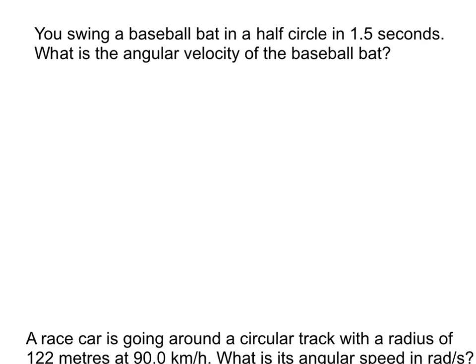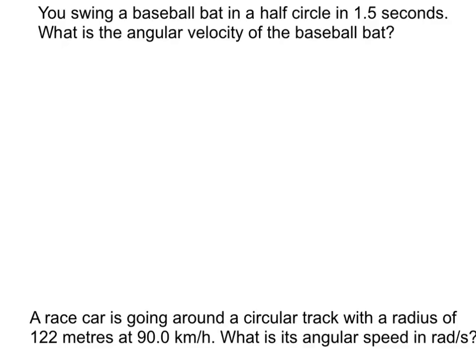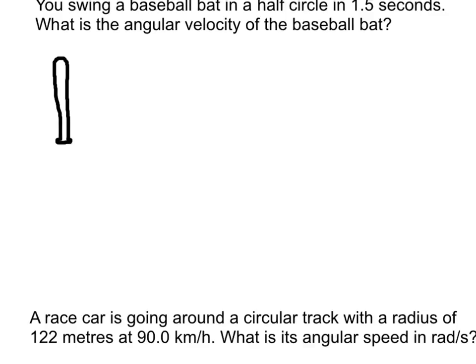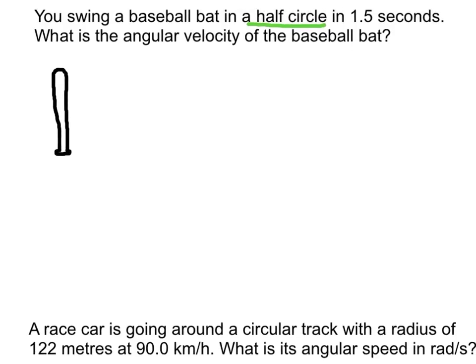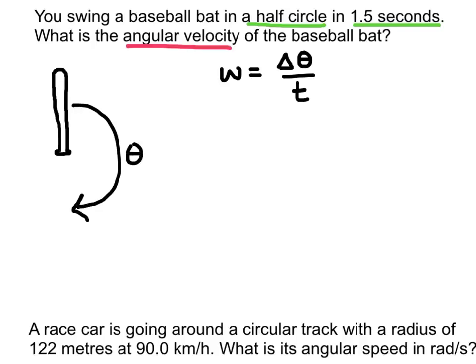So here's a couple examples. The first one here is saying if we swung a bat in a half circle in 1.5 seconds, what would be the angular velocity of that bat? The information that we know is that we've swung in a half circle, and the time was 1.5 seconds. We're going to calculate the angular velocity. So the equation we'll use is angular velocity equals the change in the angle over time. And we use SI units to describe the change in the angle. It would be 180 degrees, but the SI unit is radians.